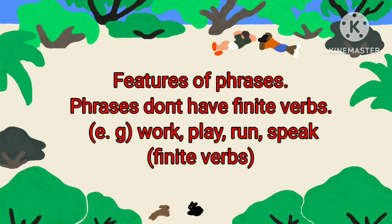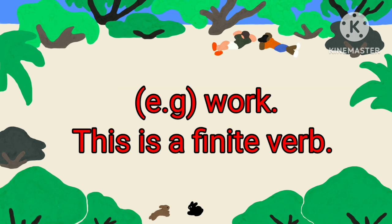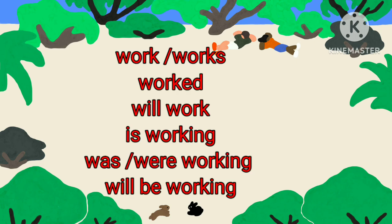Features of Phrases. Phrases don't have finite verbs. What is a finite verb? A finite verb can express 12 tenses. Shall we take the example 'work'? Work is a finite verb. This verb can express 12 tenses.